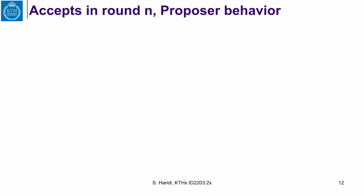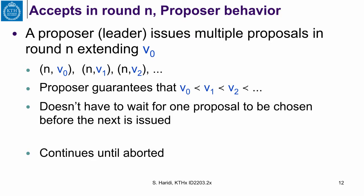Now let us look at accept in round N from the proposer's perspective. The leader issues multiple proposals at round N, extending the sequence it got at the prepare phase. Starting with V0, it extends to V1, V2, still with the same round number N. The proposer guarantees by extension that V0 is a prefix of V1, and V1 is a prefix of V2. Importantly, the proposer does not wait for one proposal to be chosen before extending and issuing the next — it sends all these extensions continuously until aborted.